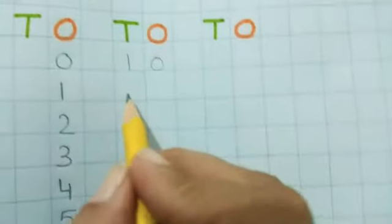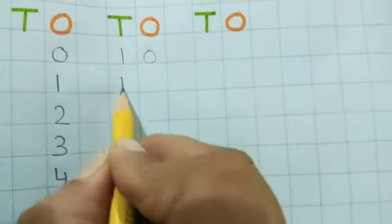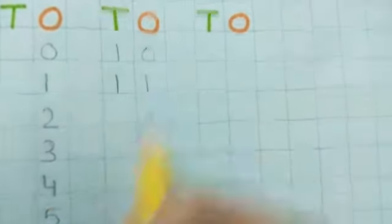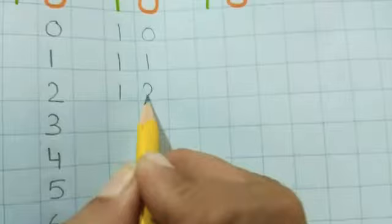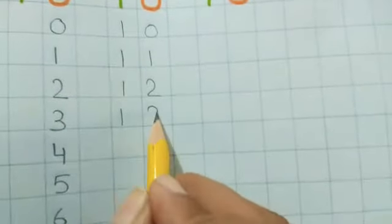After 10. 10 and 1 is 11. 10, 1, 11. 10, 2, 12. 10, 2, 12. 10, 3, 13. 10, 3, 13.